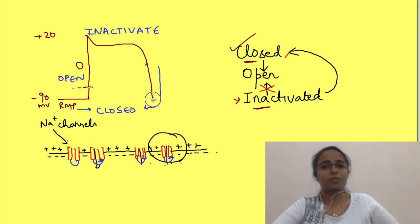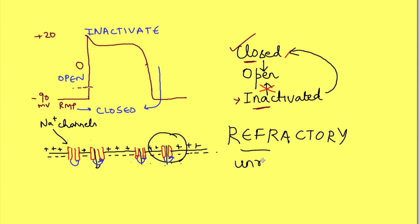As potential reaches to RMP, all the channels close. This property of sodium channels is what makes the cells refractory for a certain period of time when action potential occurs. Refractory means unresponsive. That is, cells do not respond to a new stimulus during that time.